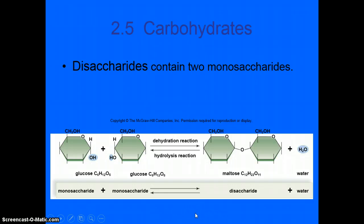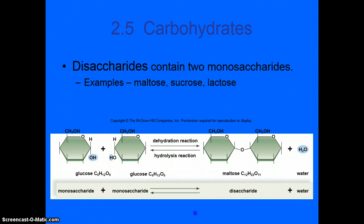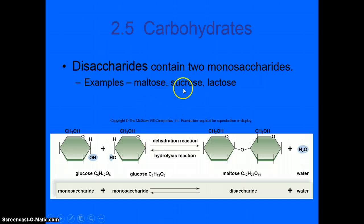So if we take two monosaccharides and we put them together, we end up with a disaccharide. And some examples are maltose, sucrose, and lactose. Maltose is malt sugar, sucrose is sugar that we're familiar with like table sugar, lactose is milk sugar. So this shows that if we take two glucose and we do a dehydration reaction, we will link them together and form a maltose and give off water. We can also have this reaction go the other way and take maltose, go through a hydrolysis reaction where we add water in and end up with two glucose monomers again.